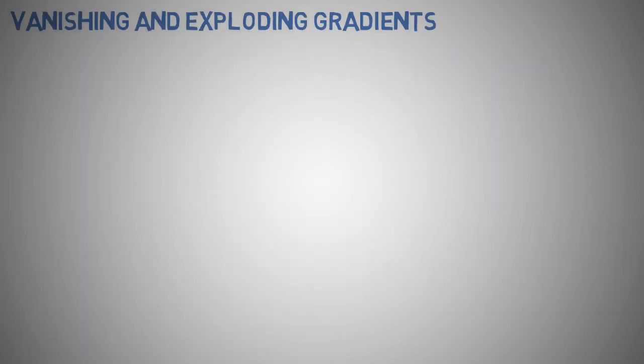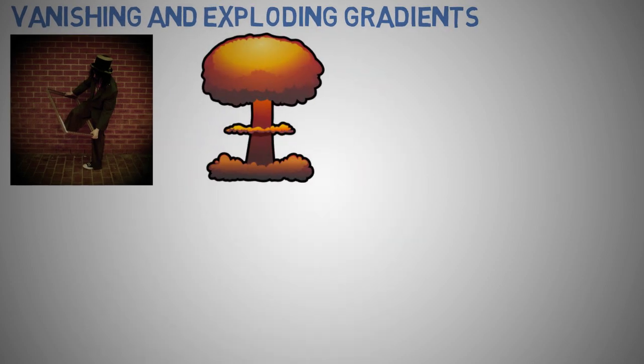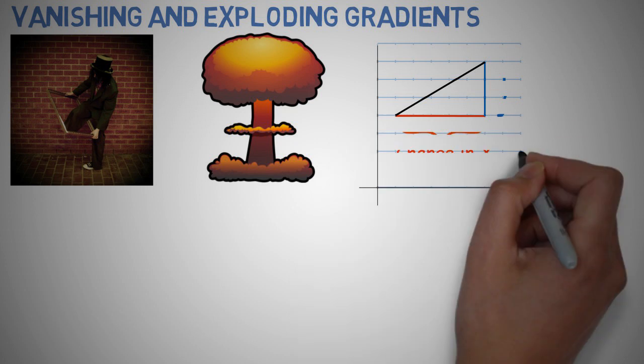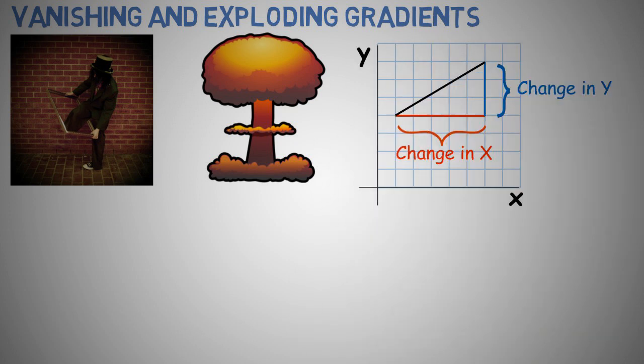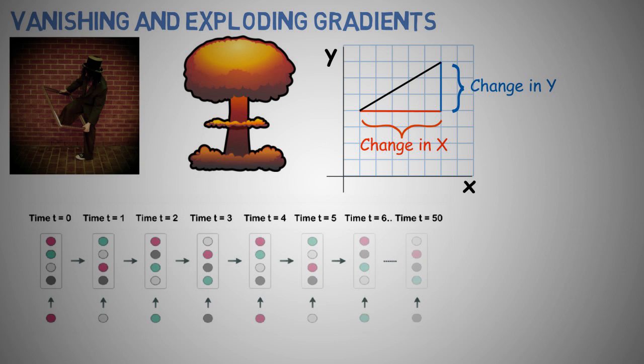Vanishing and exploding gradients. One of the problems of training neural networks, especially very deep neural networks, is data vanishing and exploding gradients. What that means is that when you're training a very deep neural network, your derivatives or your slopes can sometimes be either very, very big or very, very small, maybe even exponentially small, and this makes training difficult. This problem is known as either vanishing or exploding gradients.